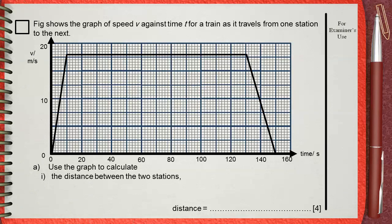Another simple and direct question. Figure shows the graph of speed v against time t for a train as it travels from one station to the next. Part a: Use the graph to calculate number 1, the distance between the two stations.